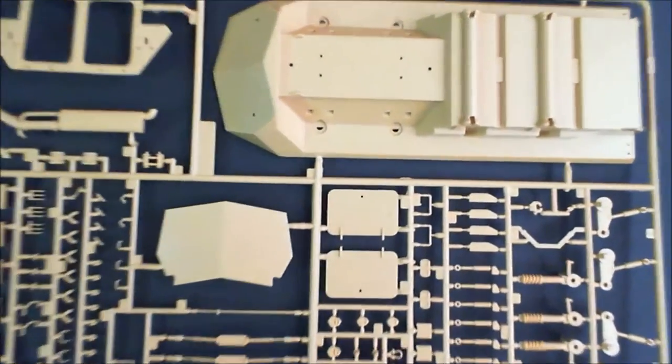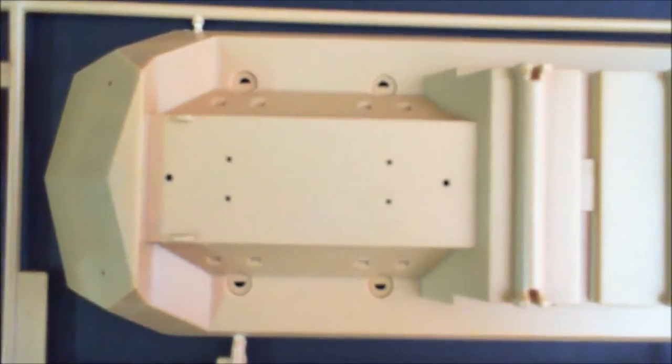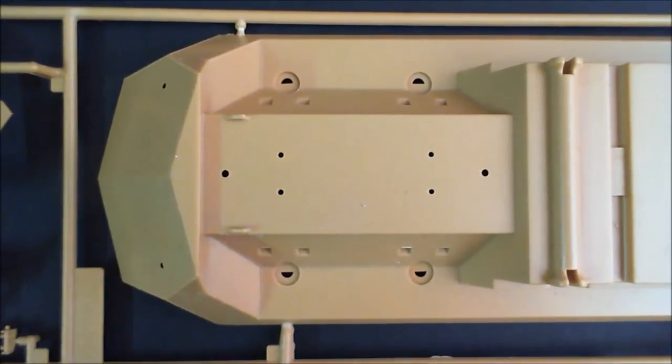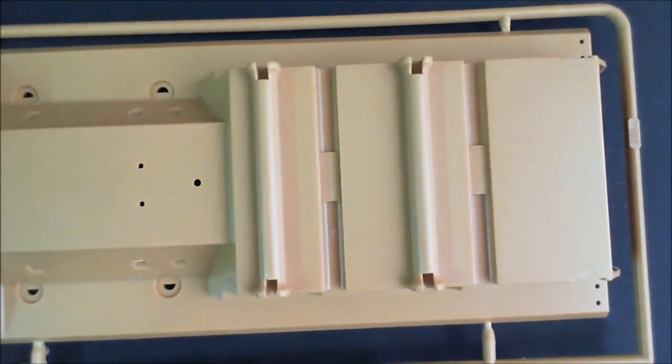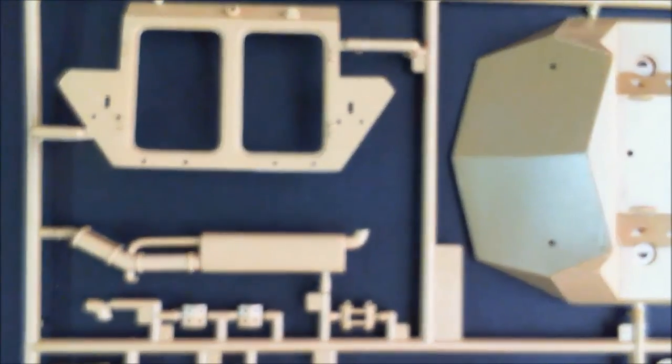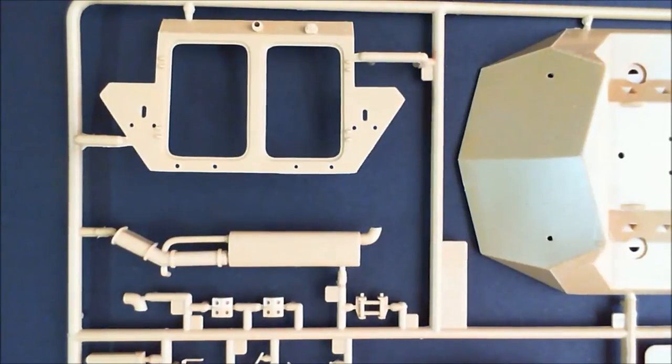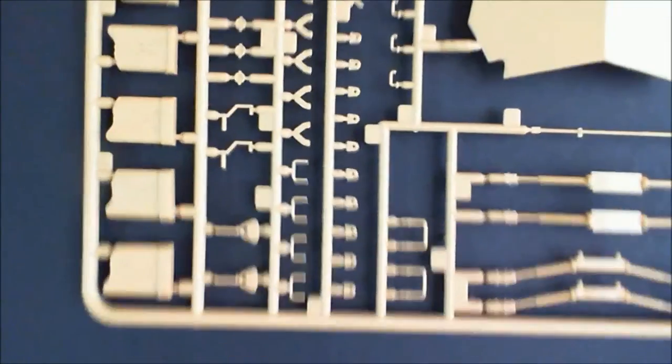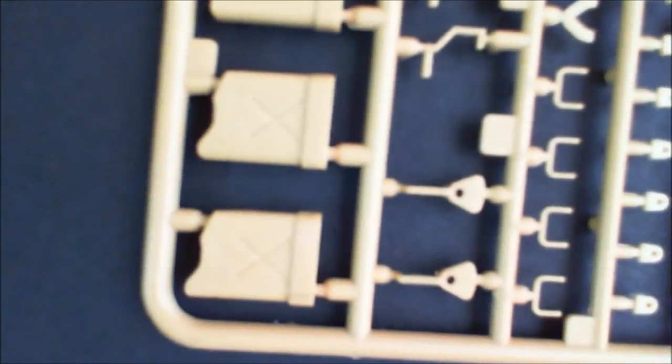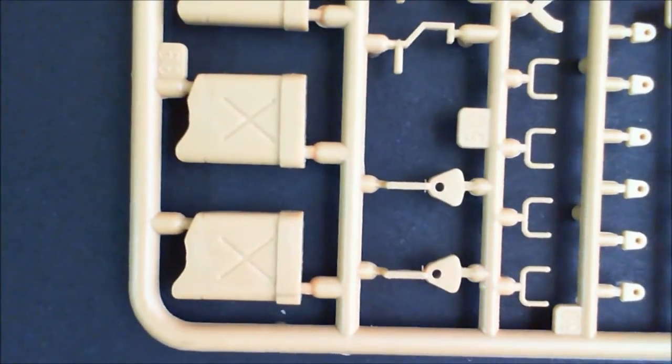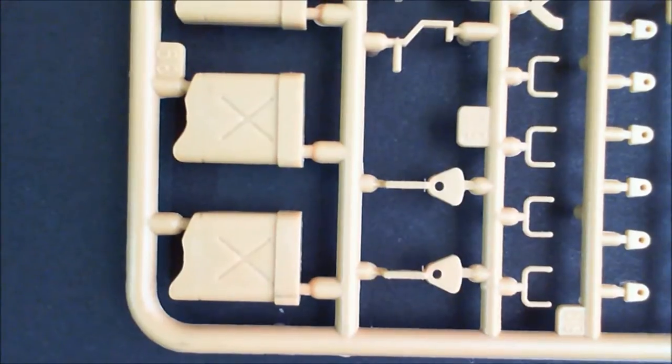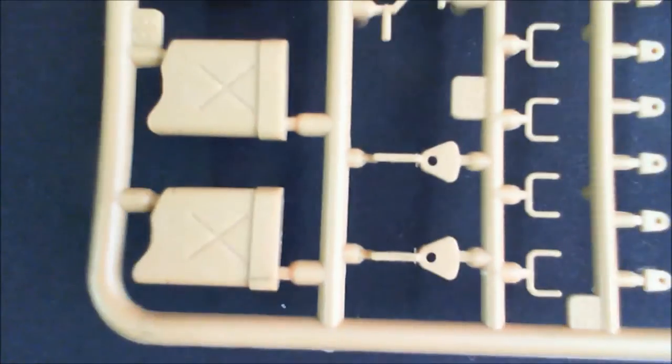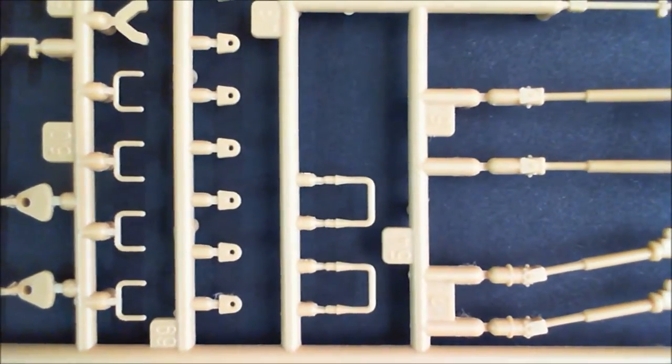Let's zoom down another bit and have a closer look at the parts to see if there's any flash and that kind of stuff. It seems okay, I don't see any flash. Molding seems quite crisp. There's the back door and the exhaust. We've got those jerry cans, they are quite nicely molded. Quite nice, quite crisp enough, they're not too bad.